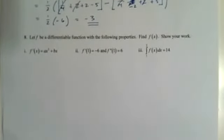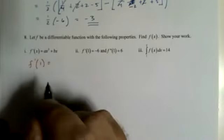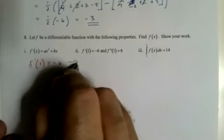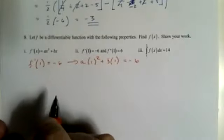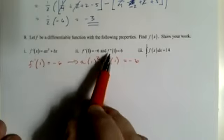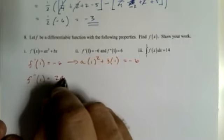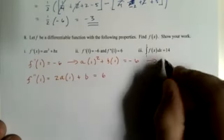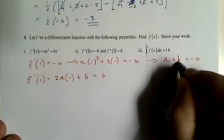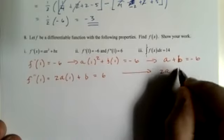Let f be a differentiable function with following property as find f of x. Yeah. I thought this was hard. All right. f prime of 1 equals negative 6. In other words, a times 1 squared plus b times 1 equals negative 6. Let's get a second derivative here. f double prime of 1 equals 2a, 1 plus b, that equals 6.